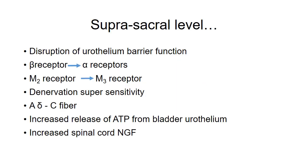At the suprasacral level, we see disruption of urothelium function — its main function is to form a barrier protecting the inner stroma. Beta receptor predominance in the body of the bladder is changed to alpha receptor predominance, and alpha receptors cause contraction of the muscles.